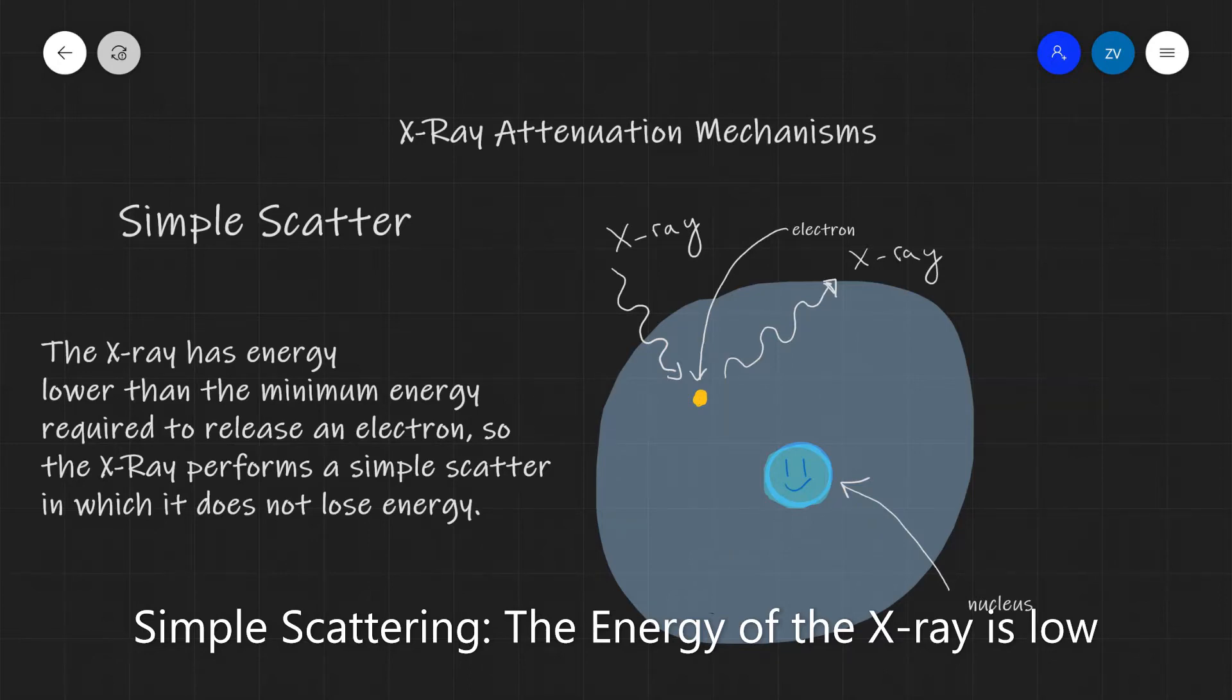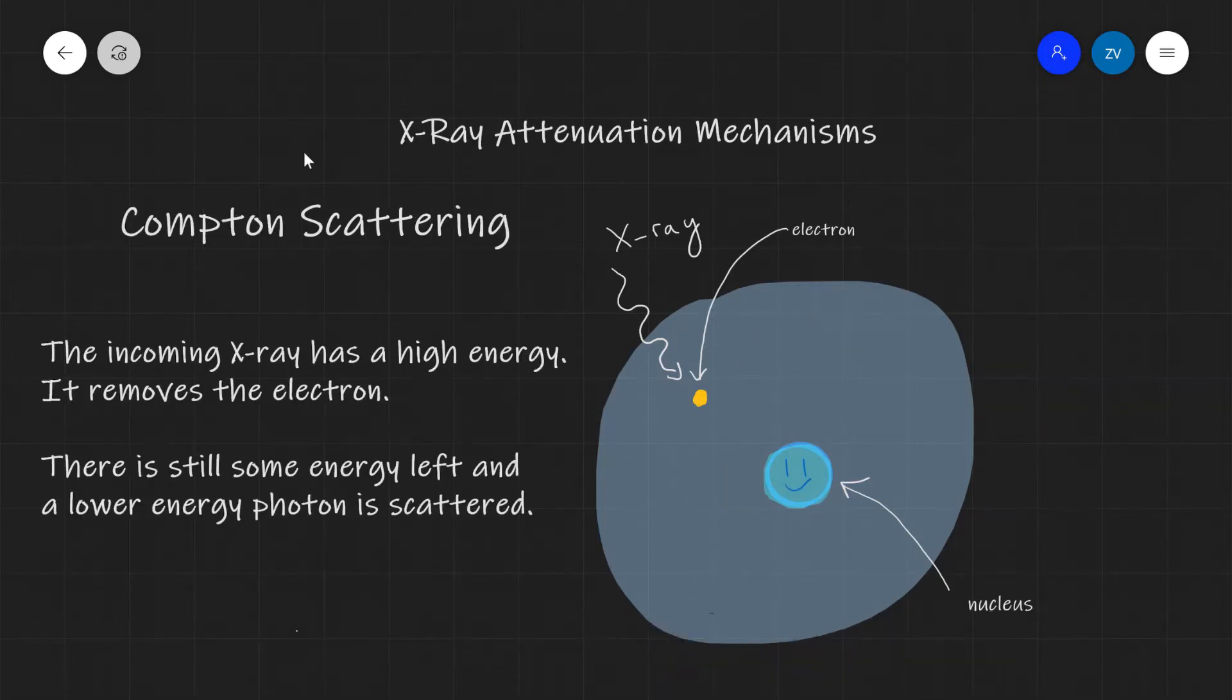Okay, now let's raise the energy of the X-ray a little bit. The next possible X-ray attenuation mechanism that we are going to be looking at is known as Compton scattering. If the incoming X-ray has a high energy, higher than what is required to remove an electron, first off an electron is going to be removed. So this electron that was once here is going to be removed. So we can just say here that the electron is removed on our diagram.